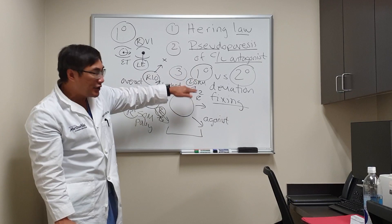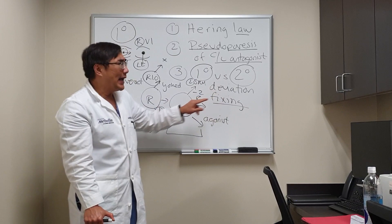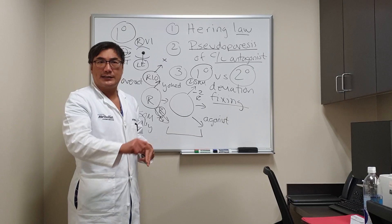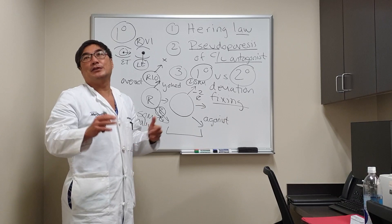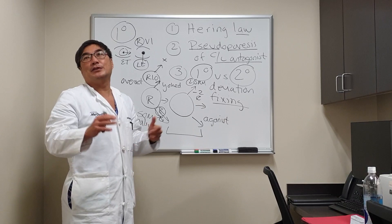That depends on whether you are fixing with the paretic or the non-paretic eye. Some people choose to fix with the weak eye either because they see better — it's 20/20 when the other eye is 20/50 — or because that happens to be their dominant eye. So you need to know how Hering's Law can apply both for pseudoparesis of the contralateral antagonist, as well as primary versus secondary deviations.